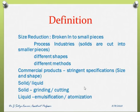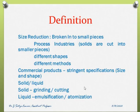At the end of size reduction, we need to have a defined size and defined shape — that is the main objective. We cannot handle large, big-sized particles, which is why we need small-sized particles. In this mechanical unit operation, we talk about solids: how to handle solids and what are the different methods to reduce particle size.